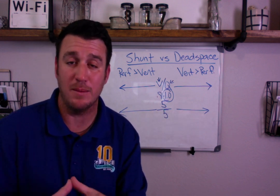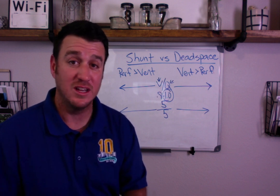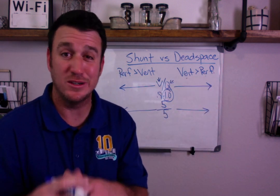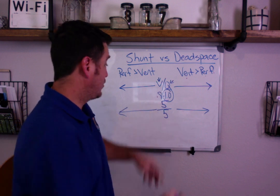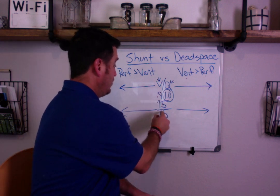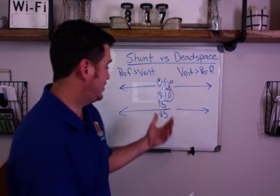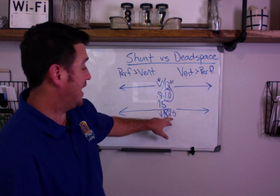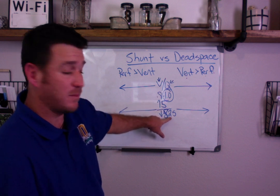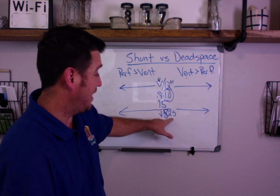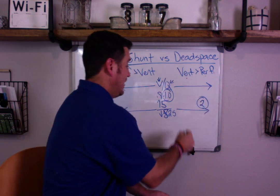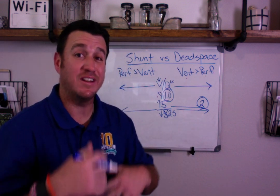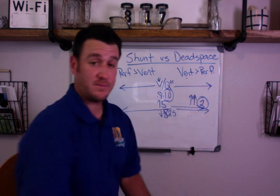What effect does a dead space problem have on VQ ratio? It's simple — ventilation in excess of perfusion. You can either increase ventilation or decrease perfusion. Let's take our perfusion down to 2.5. Now our ventilation is in excess of perfusion, and five divided by 2.5 equals two. That takes us to the right on our VQ ratio line — we have an increase in our VQ ratio.